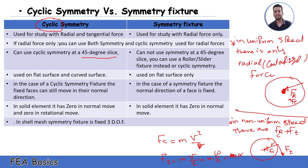Cyclic symmetry is used for both flat and curved surfaces, but symmetry fixtures are used only for flat surfaces. In the case of cyclic fixtures, the fixture face can move in its normal direction. But in the case of symmetry fixtures, the normal direction is fixed. In solid elements, cyclic gives zero in normal movement and zero in rotation. For symmetry in solid elements, we also have zero in normal movement. In shell mesh, symmetry fixtures fix 3 degrees of freedom.